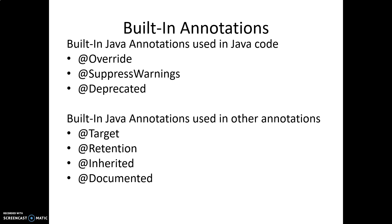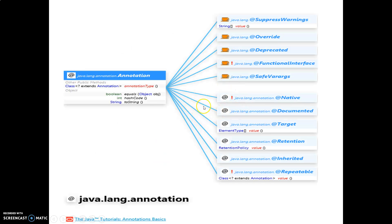Most of the time we don't create user-defined annotations; instead we use things already present in the JDK — the built-in annotations. Built-in annotations used with Java code include @Override, @SuppressWarnings, and @Deprecated. Built-in Java annotations used inside other annotations include @Target, @Retention, @Inherited, and @Documented. These are the seven main important built-in annotations provided by the JDK. java.lang.annotation is the superclass, with derived classes such as SuppressWarnings, Override, Deprecated, and so on.